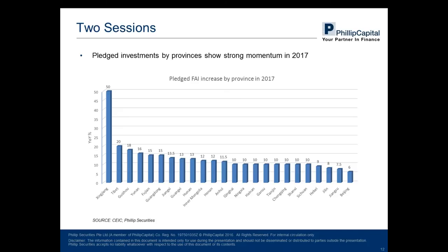This chart shows the pledged fixed asset investment increase by provinces this year. Xinjiang, Tibet, Guizhou, and Yunnan are the top four provinces — especially Xinjiang, which increased by even 50%. These provinces, compared to developed eastern provinces like Beijing and Jiangsu, are located in western China with large areas but fewer people. It is reasonable for the government to invest more in these provinces. Since most of these provinces border other countries, this will benefit Belt and Road Initiative-related stocks and companies.